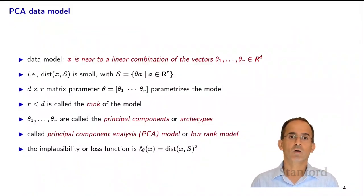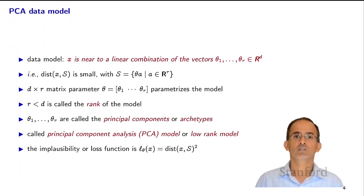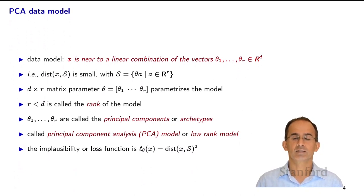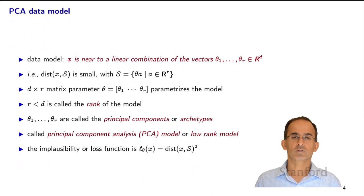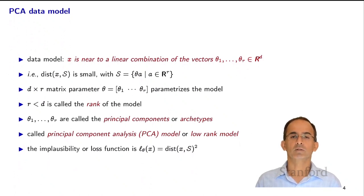Now, what is our data model? The data model is that x should be near a linear combination of the vectors Theta 1 through Theta r in R^d — in other words, near a subspace. The parameter defining the subspace is the d by r matrix Theta. The dimension r of the subspace is called the rank of the model. The vectors Theta 1 through Theta r are called the principal components or the archetypes. This is called a PCA model, or a low rank model. The loss function is the distance between x and S squared.